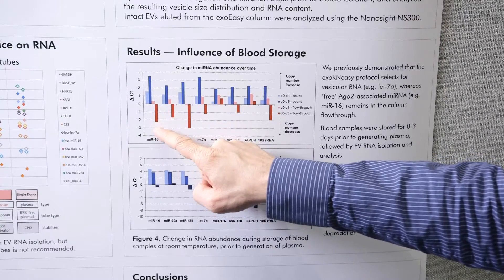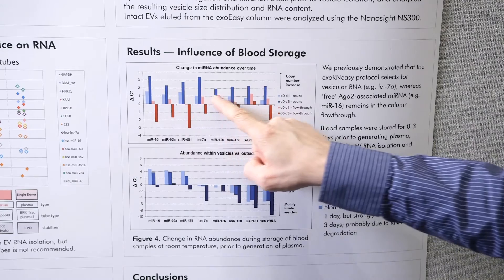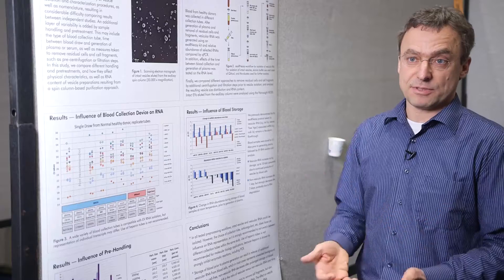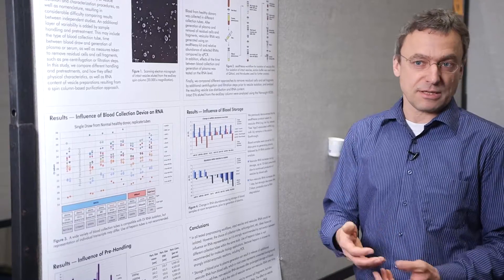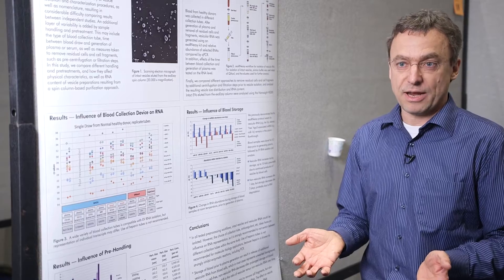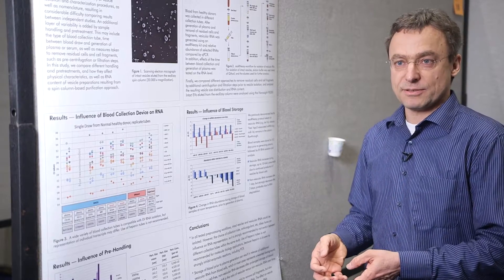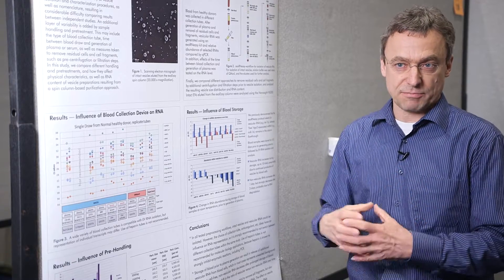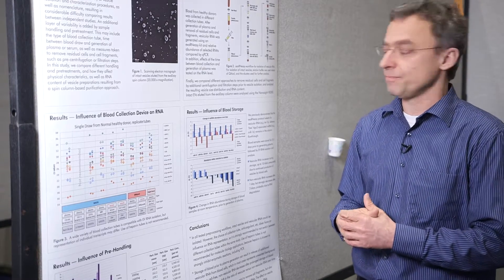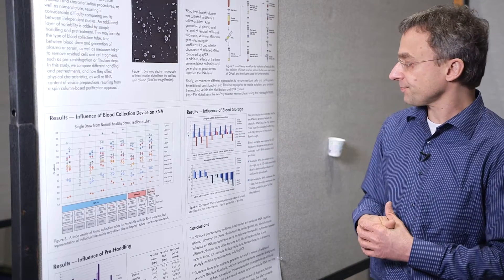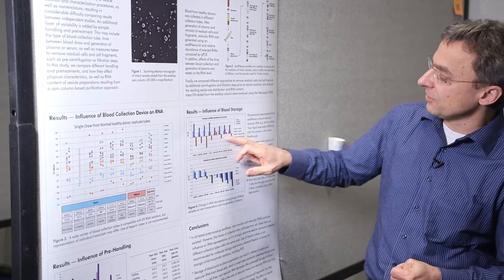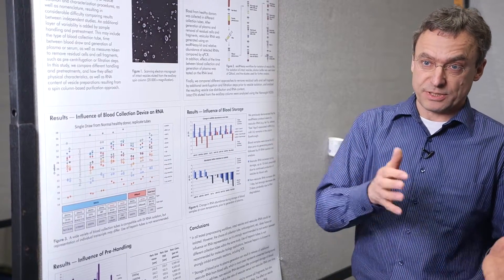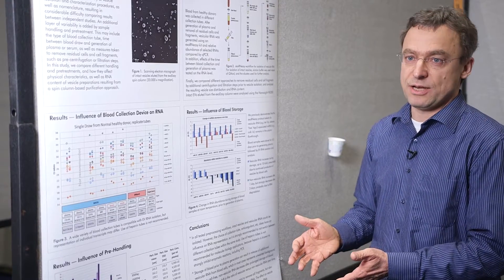We also see a slight increase in non-vesicular RNA — up to two-fold after one day. After three days it starts to go down significantly. What we think happens is that after collection, some blood cells die or undergo apoptosis and release RNA, which is then degraded. MicroRNA degrades more slowly because it's protected by AGO2 or other proteins. As a result, the representation between vesicular and non-vesicular RNA changes over time.